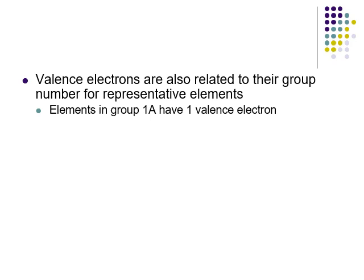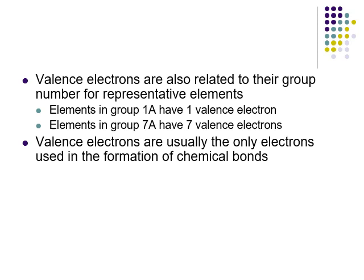Looking at a periodic table, starting at the far left we have group 1A, then 2A, then we skip the transition metals, then groups 3A, 4A, 5A, 6A, 7A, 8A. Any group that ends in A - the number of the group tells you the number of valence electrons. All elements in group 1A have one valence electron; all elements in group 7A like the halogens have seven. Valence electrons, being on the outer portion of the atom, are the electrons used in the formation of chemical bonds.